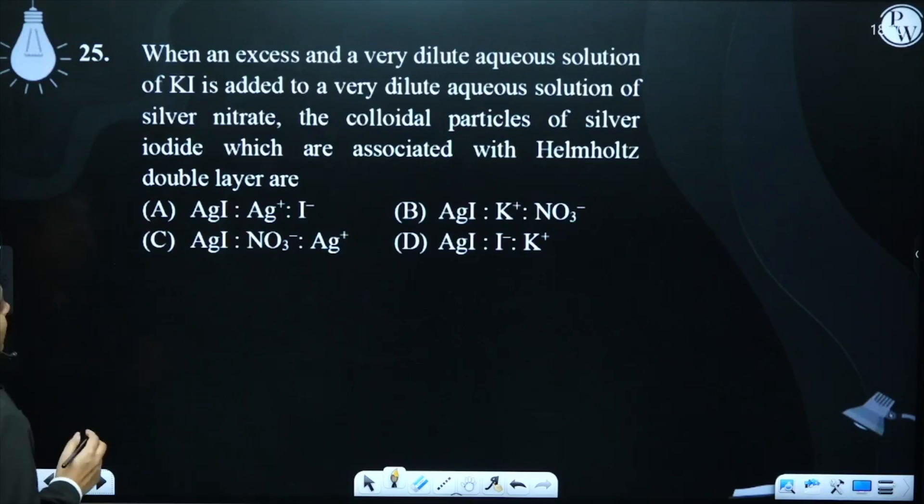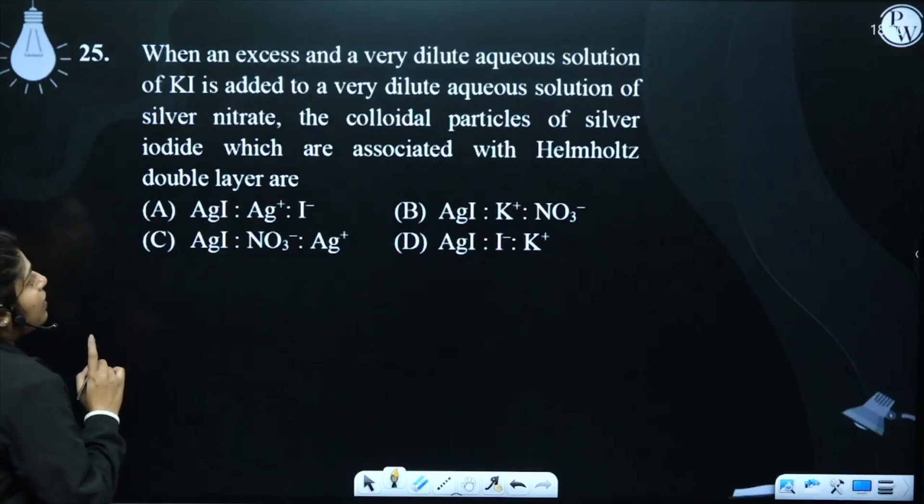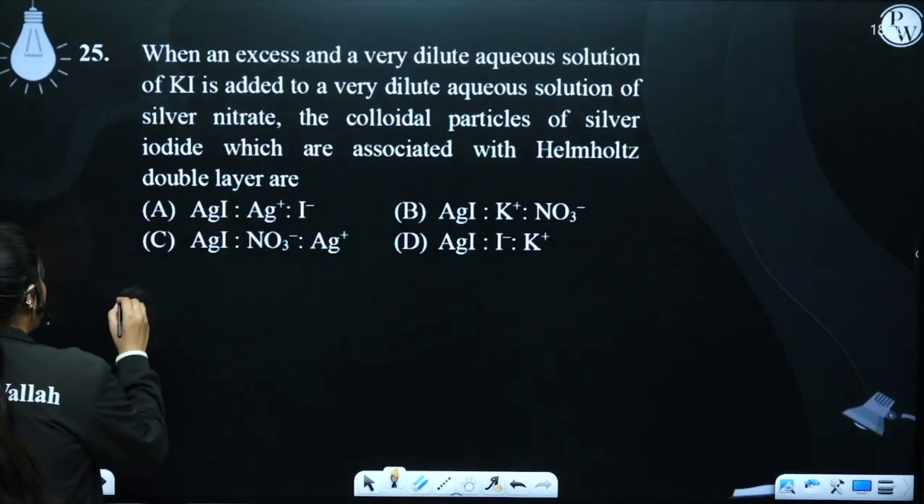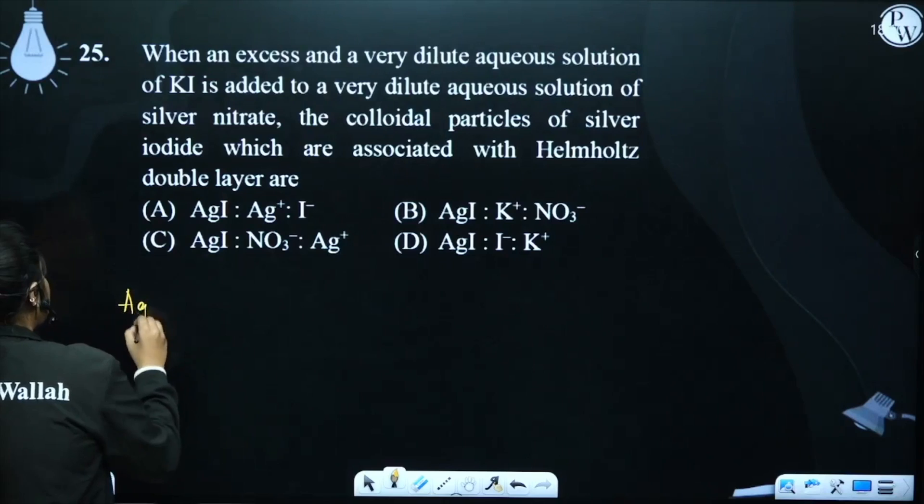What do you mean? Excess of KI is added to the solution of silver nitrate. So what will we get? Silver iodide precipitate.